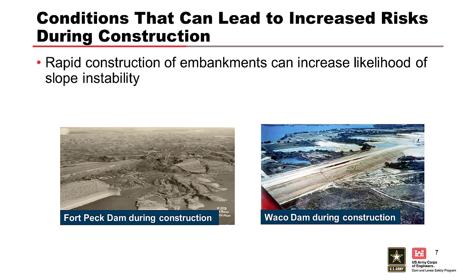There are numerous case histories where embankments were constructed at a rate that was too fast for the pore pressures to dissipate in the embankment or foundation material, which led to slope failure. These photos are from USACE projects — the one on the left is Fort Peck Dam and the one on the right is Waco Dam, both of which had major slope failures during construction.